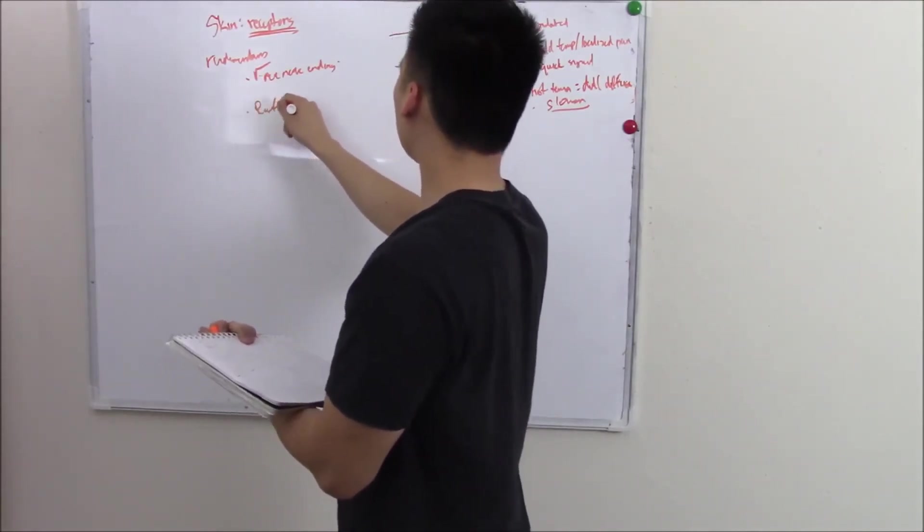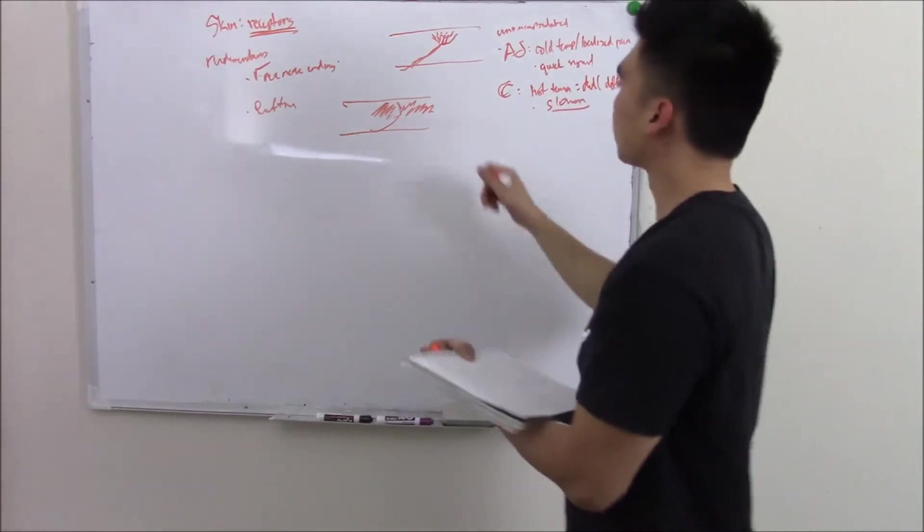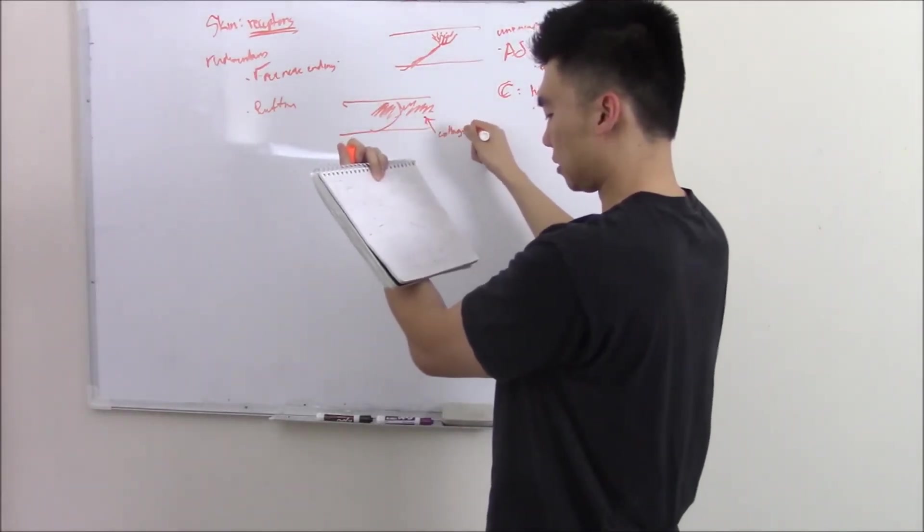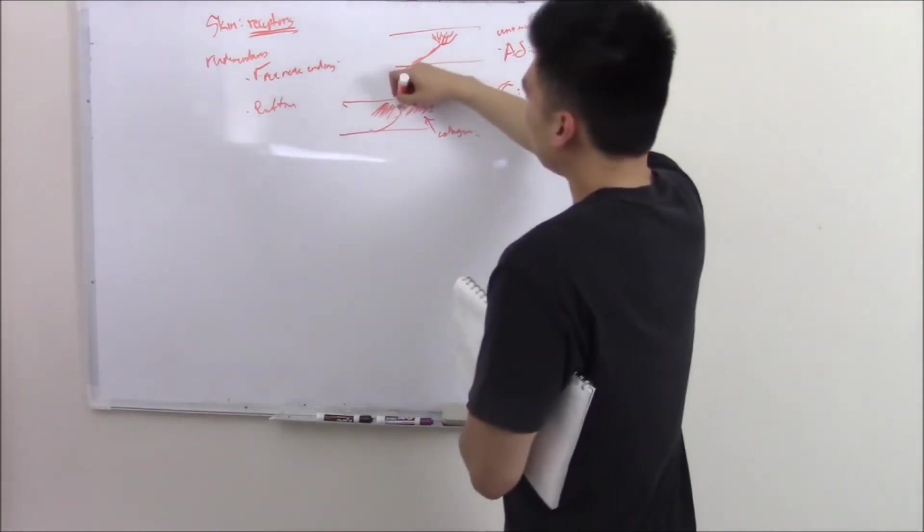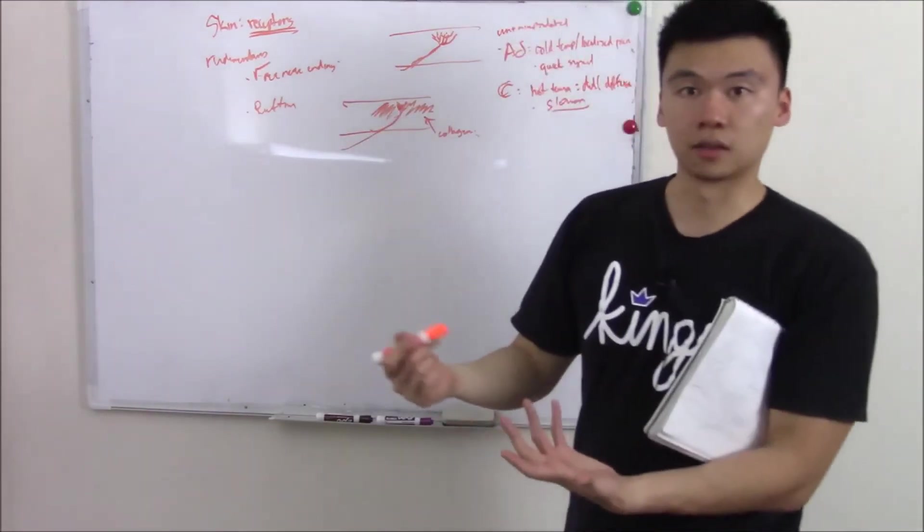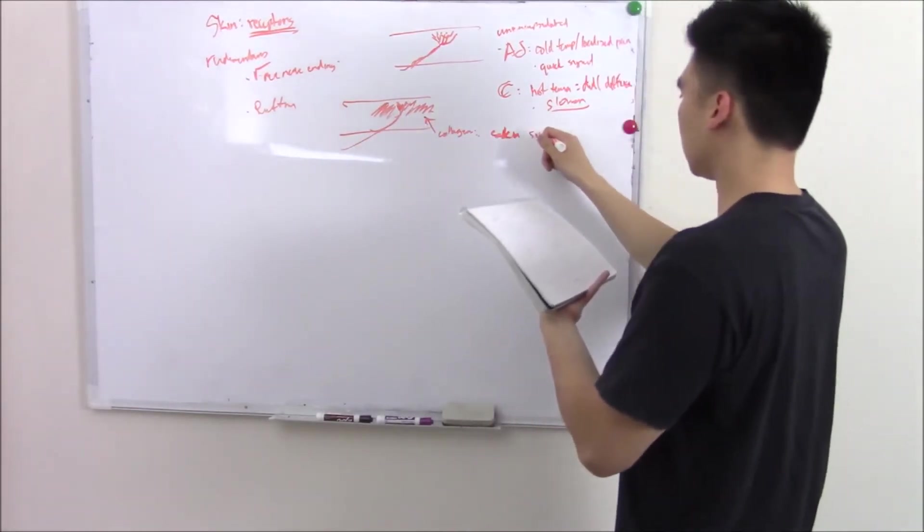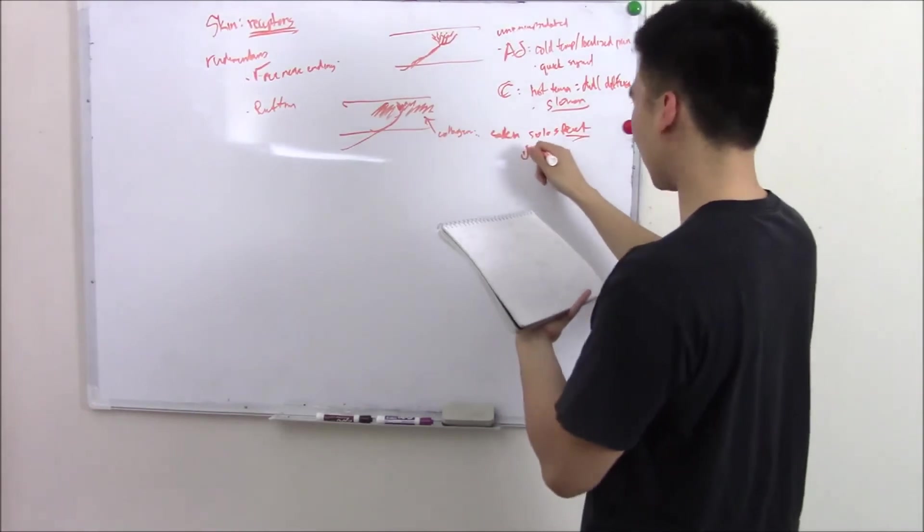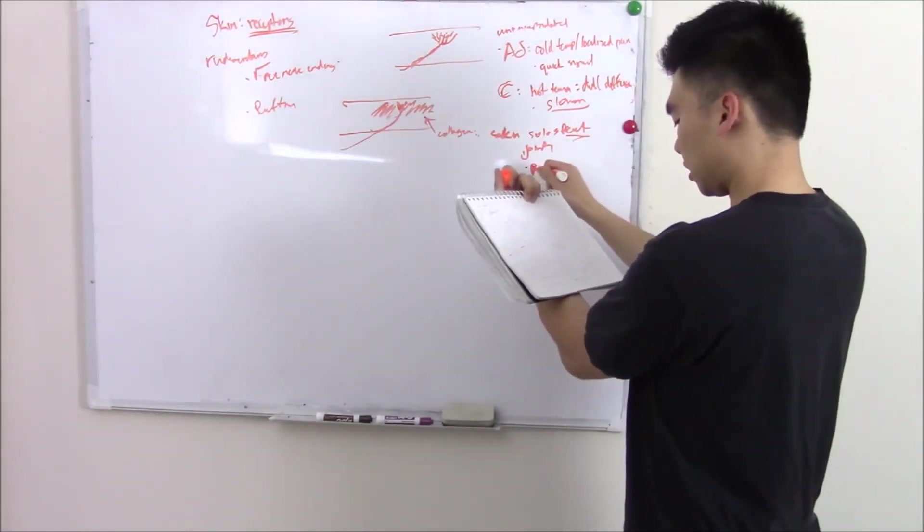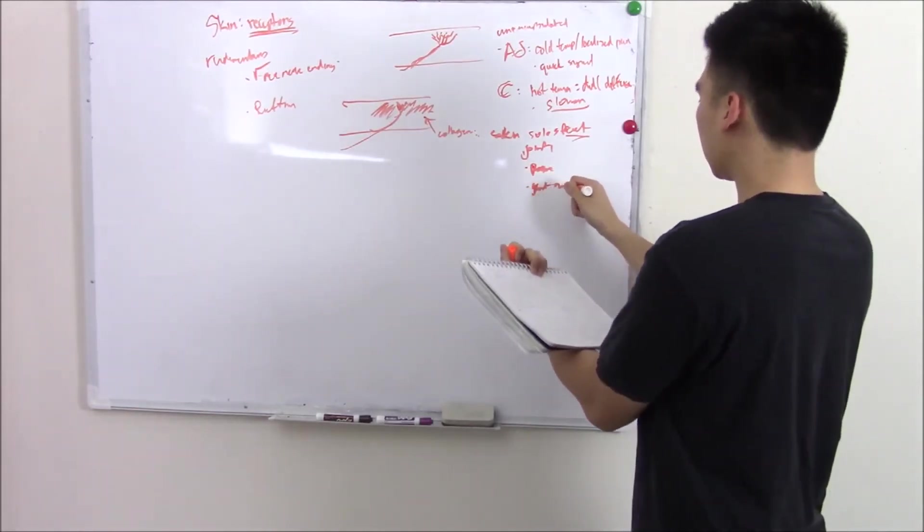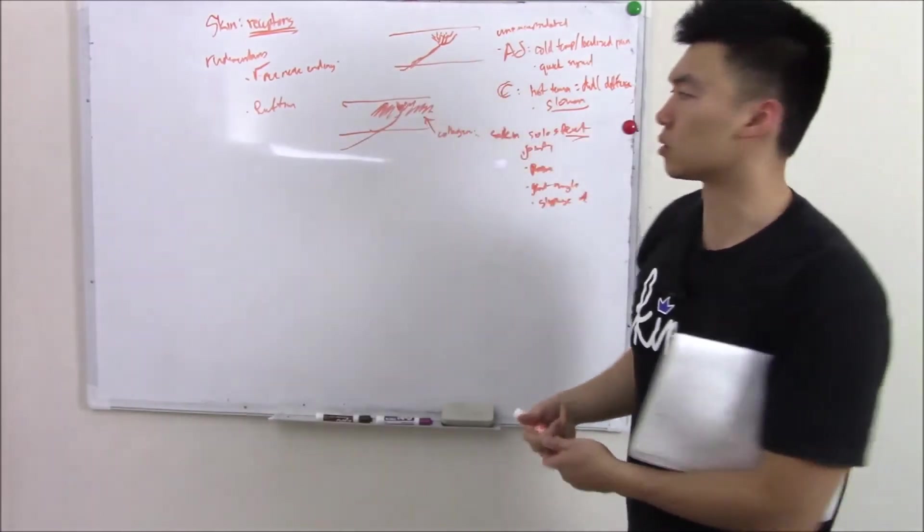Another type of receptor in the skin is going to be called your Ruffini. Your Ruffini is very similar to your free nerve endings, but your Ruffinis are surrounded by collagen. And when there's any type of movement in that collagen, then it'll cause this neuron to depolarize and send a signal. Where it's found, it's going to be found in your skin. Your skin has a lot of collagen, especially in the soles of your feet. Another place that has a lot of collagen is going to be your joints. And so it'll be able to sense kind of pressure in your joints, changes in joint motion. Pressure, joint angle, and something called slippage.